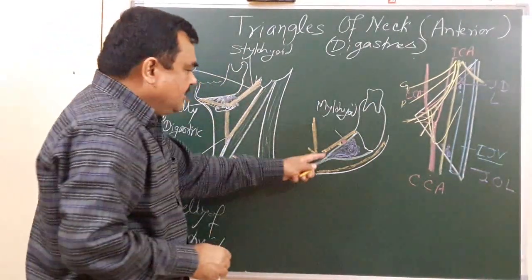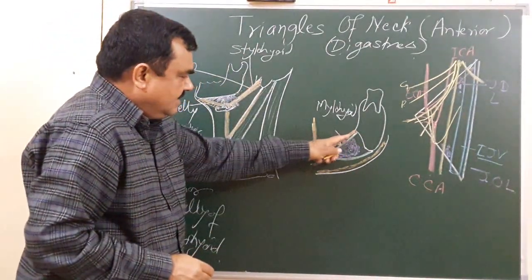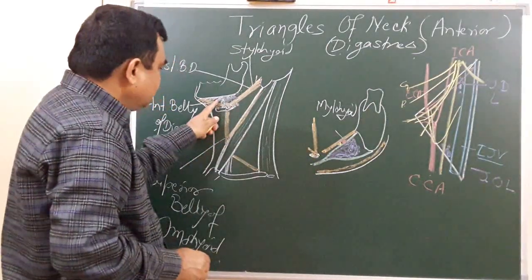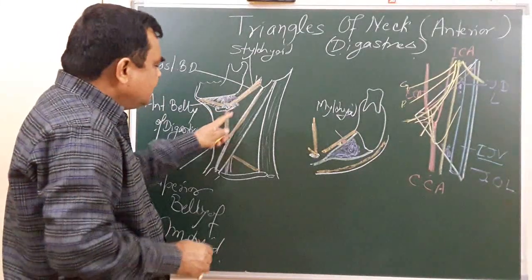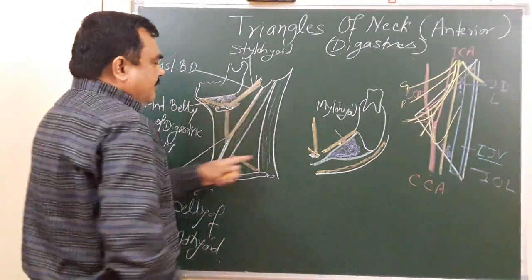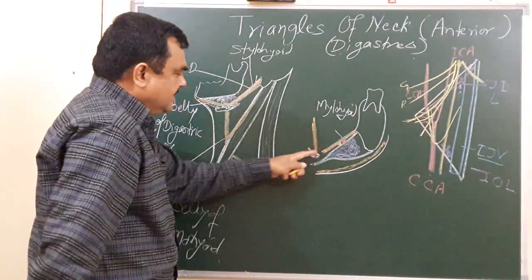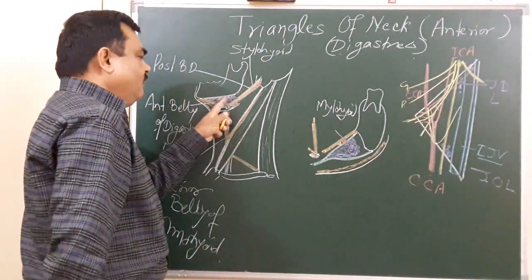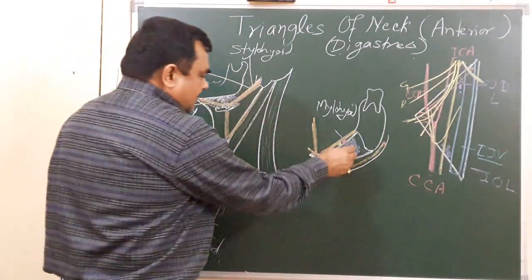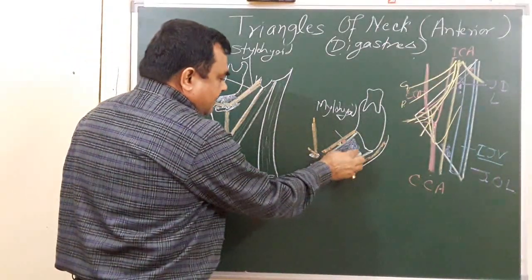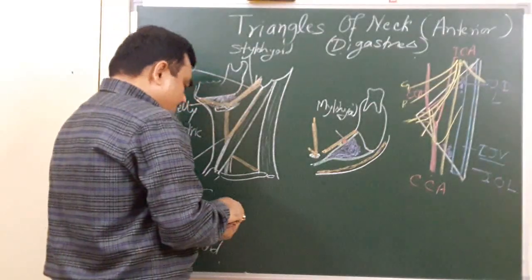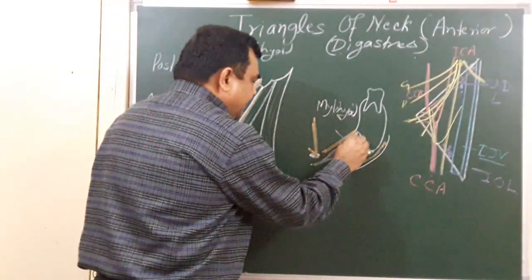So the floor is formed by the mylohyoid muscle, hyoglossus muscle, and some part of the middle constrictor of the pharynx. These structures form the floor of this triangle. The content of this triangle is the submandibular salivary gland.